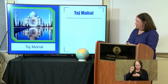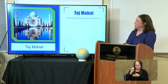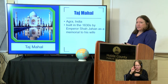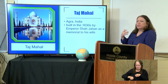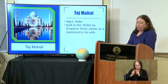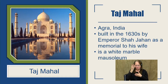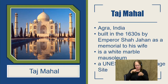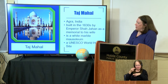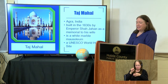Those of you who guessed Taj Mahal, you're absolutely correct. This is a beautiful structure in Agra, India. It was built in the 1630s by Emperor Shah Jahan when his wife died in childbirth. He was hoping to build a memorial to her beauty and to her love. It's a white marble mausoleum, and the United Nations has designated it as a World Heritage Site. It's a beautiful example of a mix of Persian, Islamic, and Indian architecture.